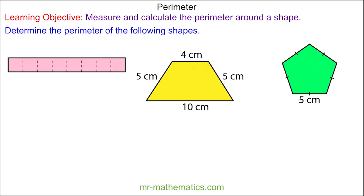Welcome to our lesson on calculating the perimeter around a shape. The perimeter of a shape is the distance around the outside edge. We can measure by counting the perimeter of this pink rectangle.